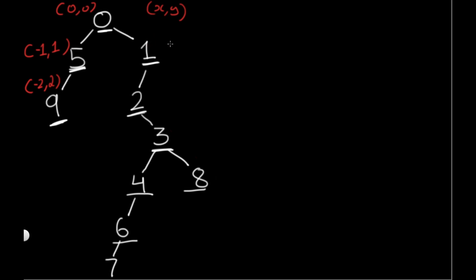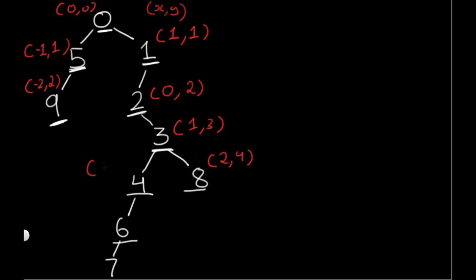Going right from the root increases X by 1, so that node is (1, 1). Going left from there gives (0, 2); going right gives (1, 3); going right again gives (2, 4). The left child at level 4 is (0, 4), then (-1, 5), and (-2, 6). This is how our coordinate numbering looks across the whole tree.